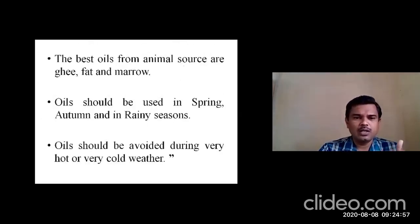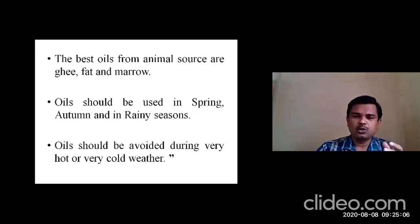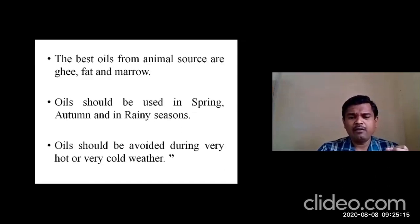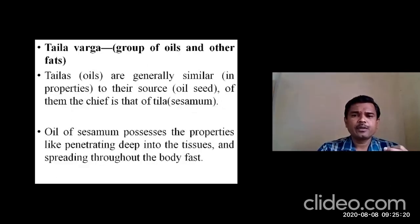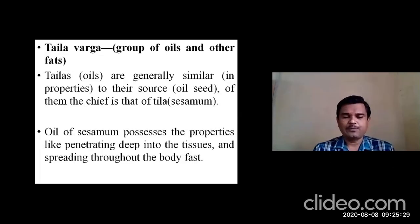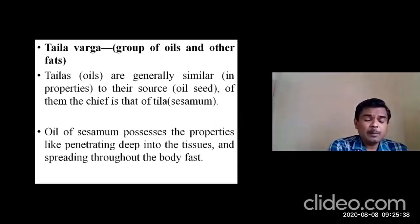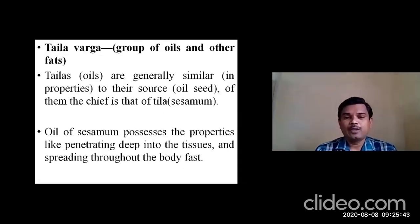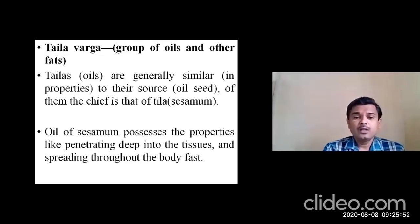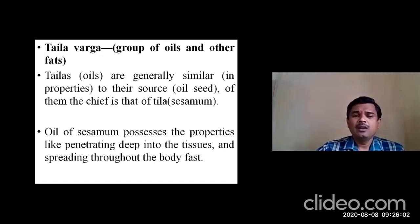The best oils from animal sources — Gruta, Vasa, and Majja — should be used in spring and rainy season. Throughout the year, different foods are prepared using oils. Oils should be avoided during early hot and very cold weather. Thailas generally have similar properties to their source — if obtained from seeds, the properties of the seeds will be present in the Thaila; if from fruit, it will share the fruit's properties.